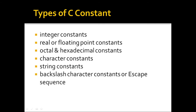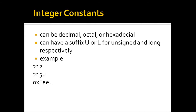There are several types of C constants: integer constants, real or floating-point constants, octal and hexadecimal constants, character constants, string constants, and backslash or escape sequence constants. Integer constants can be decimal, octal, or hexadecimal.